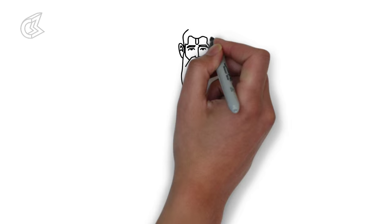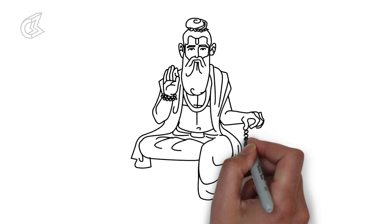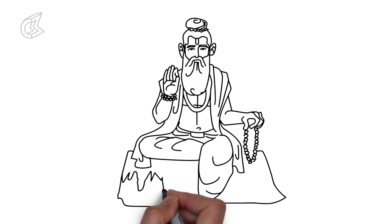Maharishi Valmiki is well known as the author of the great epic Ramayana. Valmiki is known as Adikavi, or the first poet, as he is the creator of the shloka, a verse form that forms the bedrock of epics like Ramayana, Mahabharata and the Puranas.